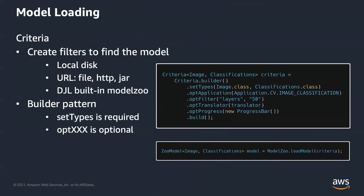Before we get to model inference code, I would like to introduce the Criteria API. It is introduced to make model loading easy. A model can exist on local disk, our DJL model zoo, a distributed file system like HDFS, or elsewhere on the internet with a URL. Model loading for different sources could be quite different. By using Criteria API, we get minimal code changes for different locations.